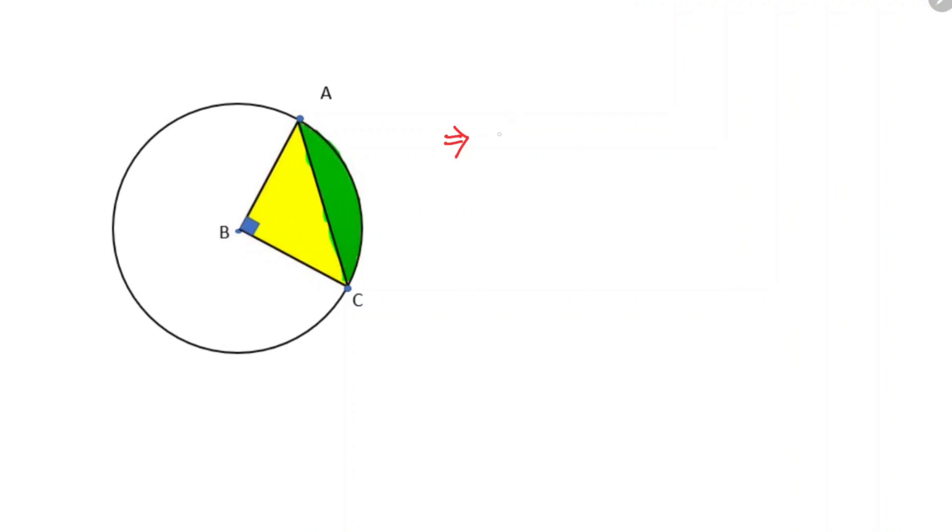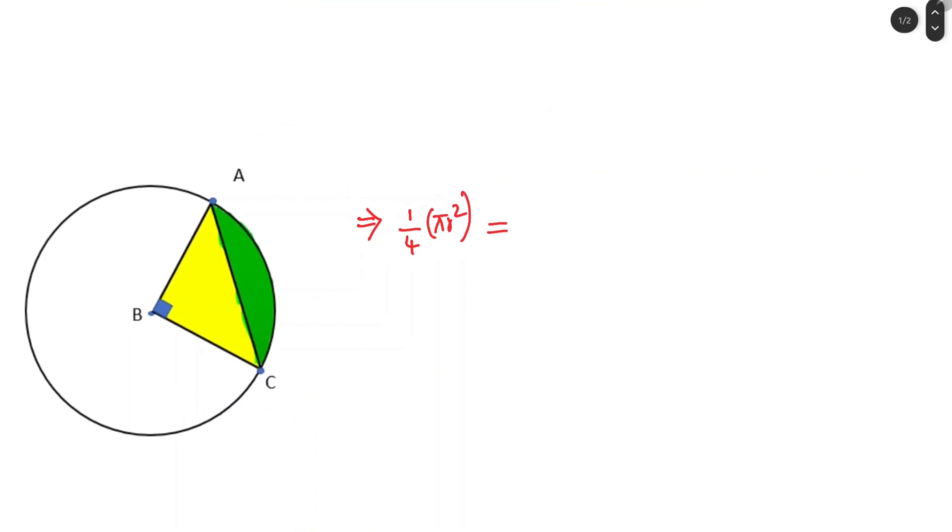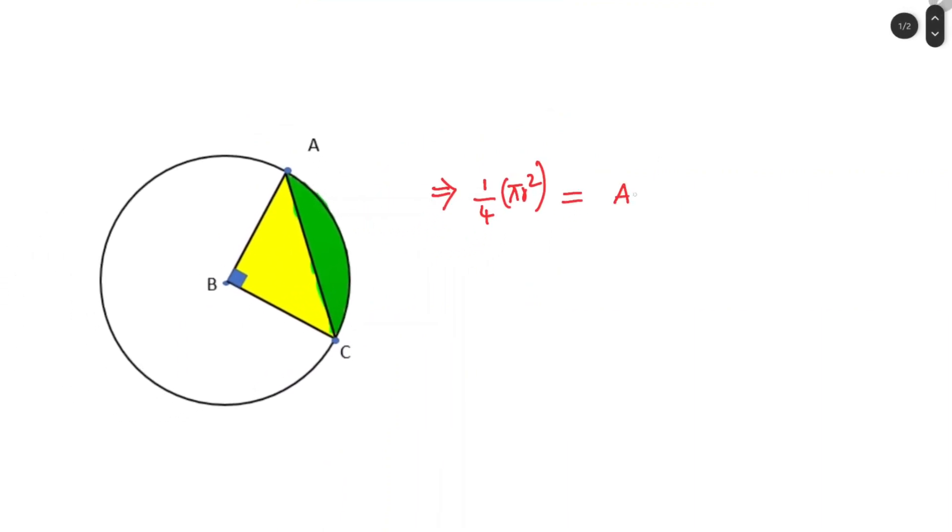That will be equal to 1/4 times πr² which is equal to area of the triangle ABC plus area of this segment AC.